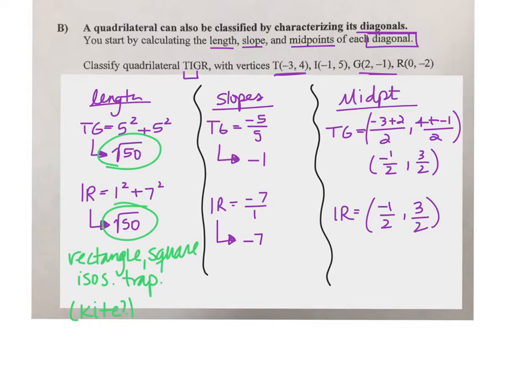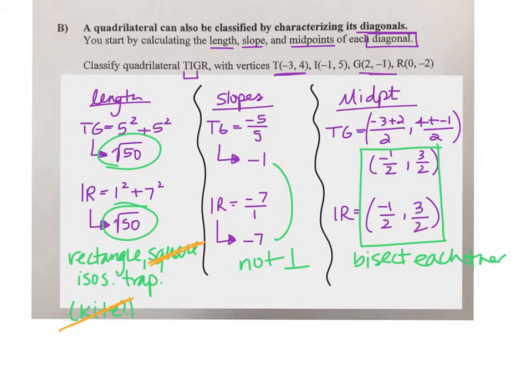The slopes are not going to be perpendicular. Since these two are not perpendicular, I know that's going to actually eliminate some of my options. It can't be a square because squares make those four isosceles triangles in the middle, and it can't be a kite because those have to be perpendicular to create a kite shape. For midpoints, these have the same midpoint, which we said today means that they bisect each other. If they bisect each other, that means we're looking at a parallelogram of some sort. So that means I can only go with something that's a parallelogram.